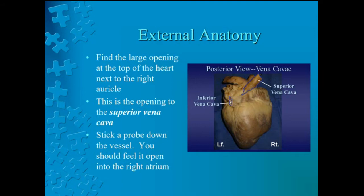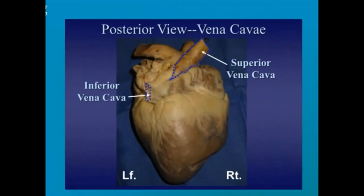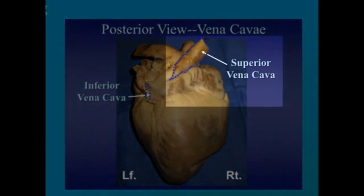Now place your heart in its original position with the left atrium and ventricle in your right hand. Locate the large opening at the top of the heart next to the right auricle. This opening is the superior vena cava. The superior vena cava brings blood from the top half of the body to the right atrium. At this time, stick a probe or your finger down the vessel and you should feel it open into the right atrium. Pause to let everyone locate the superior vena cava.